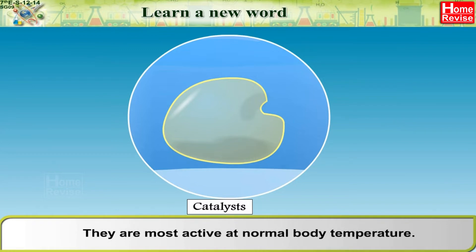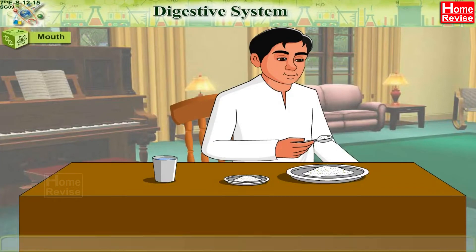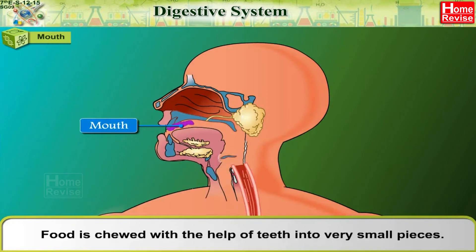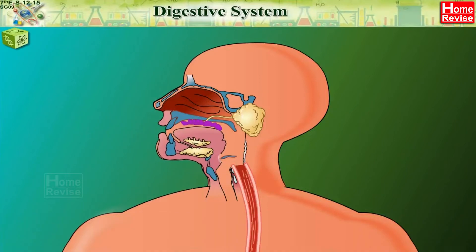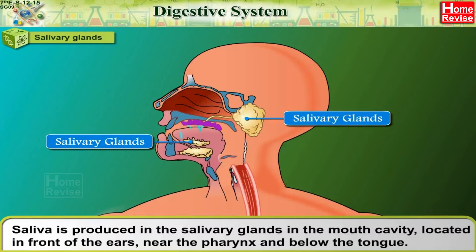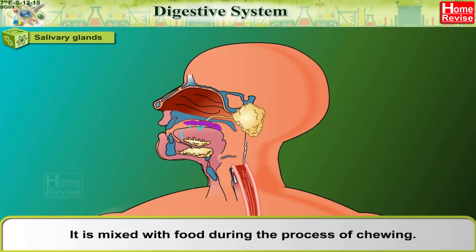Mouth: Digestion of food begins in the mouth, where food is chewed with the help of teeth into very small pieces. Salivary glands produce saliva in the mouth cavity — located in front of the ears, near the pharynx, and below the tongue. Saliva is carried to the mouth via ducts and is mixed with food during the process of chewing.